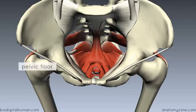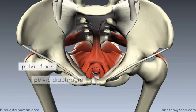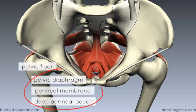The pelvic floor separates the pelvic cavity above from the perineum below. It consists of the pelvic diaphragm, and then you've got the perineal membrane and the deep perineal pouch. The term pelvic diaphragm is often used interchangeably for pelvic floor. In this tutorial, I'm going to talk about the pelvic diaphragm in relation to two specific muscles, and then go on to cover the perineal membrane and the deep perineal pouch. These three structures combined make up the pelvic floor.